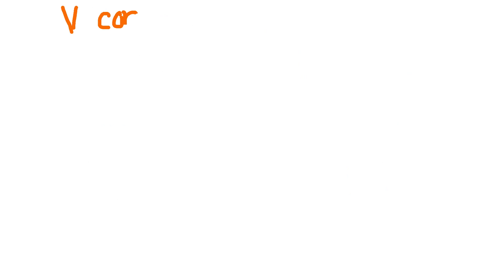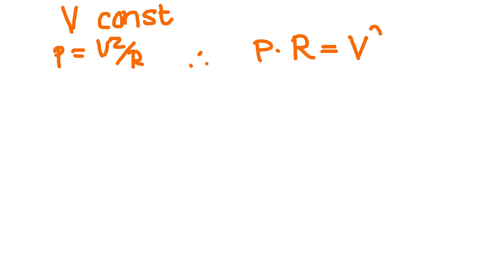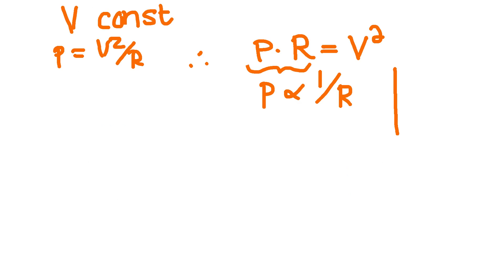Now let's look at what happens if these resistors are in parallel. For parallel resistors, V is constant, so we use P equals V squared over R. Bringing R across: P times R equals V squared, which is constant. When two variables multiplied together equal a constant, those variables are inversely proportional. So power is inversely proportional to R when V is constant — which is the condition satisfied in a parallel circuit. Graphically, this relationship produces a hyperbola.